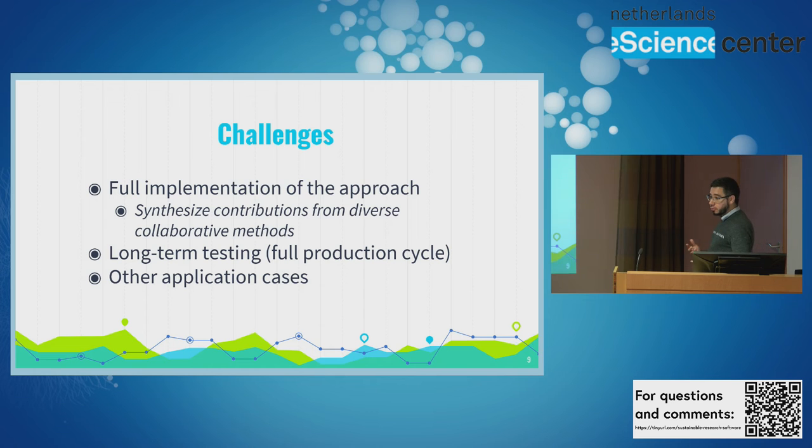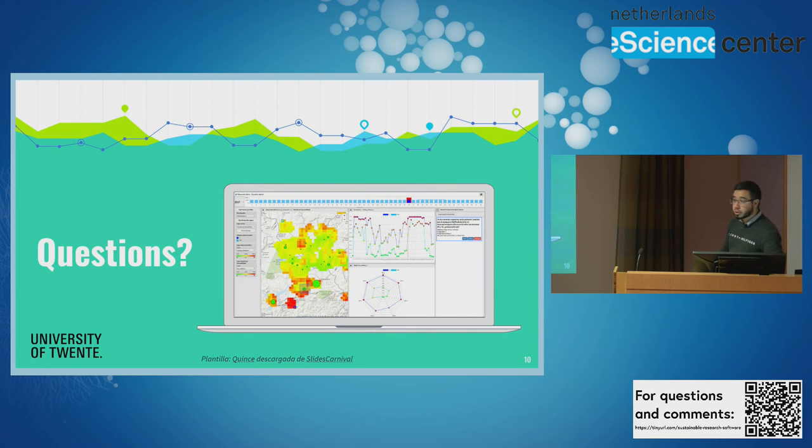Which challenges were identified by the end of this development and also testing? Well, we need to do an actual full implementation of the approach because this was a reduced version of the approach itself. And we already know that there will be a challenge that will arise from this full implementation. If we offer several collaborative techniques, there is a need to provide tools to synthesize the contributions from them. And that is not a trivial task. It is also needed to do a long-term testing, for example, a full production cycle. In the case of Spain and the olive fruit fly, it means one year at least. And also it's necessary to test the prototype in other application cases. From the feedback, the stakeholders already mentioned that they can see this prototype working well in the different pests and diseases they monitor and control.